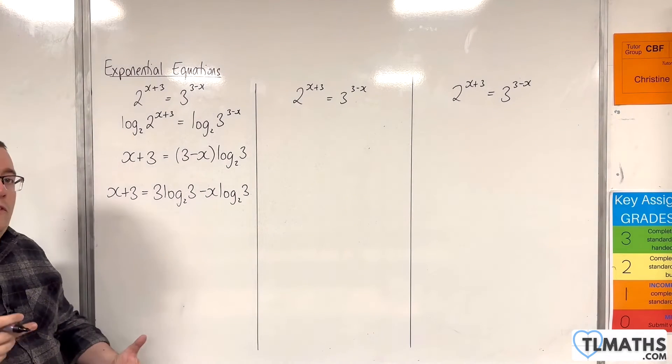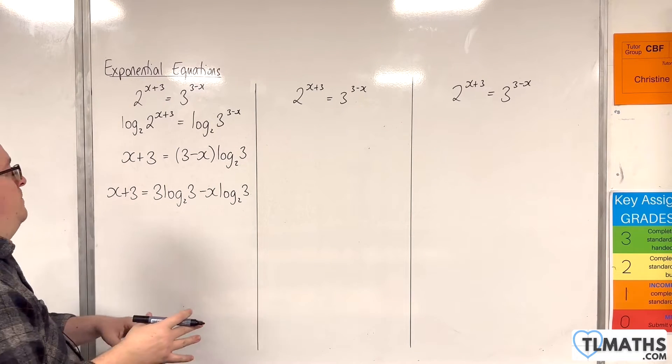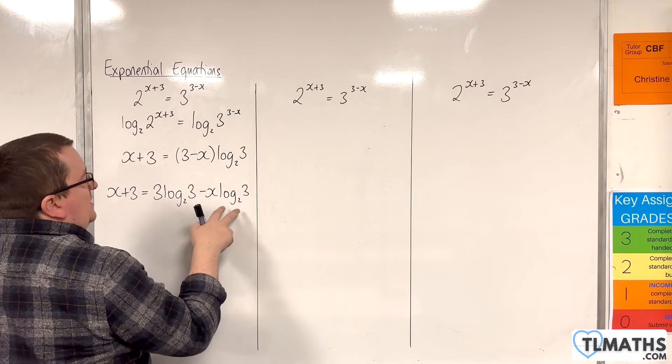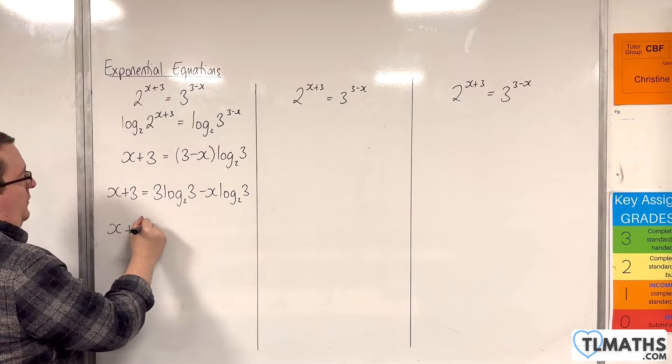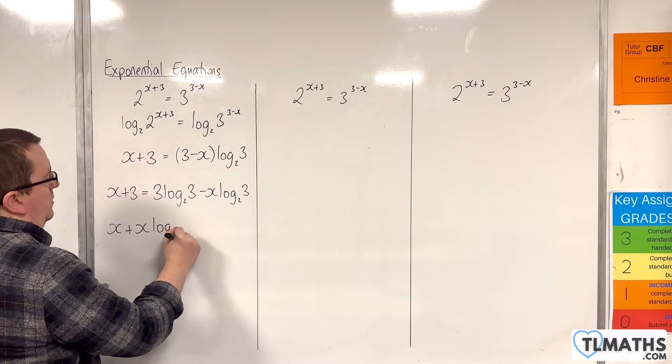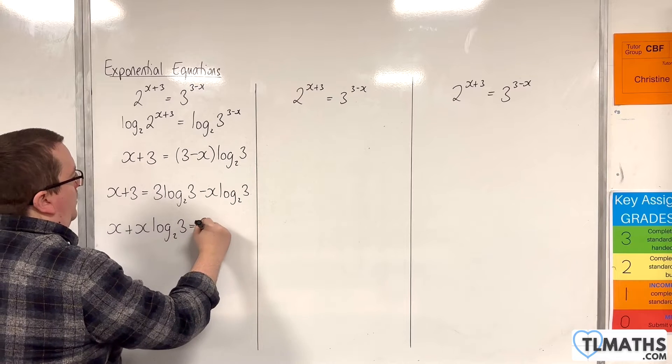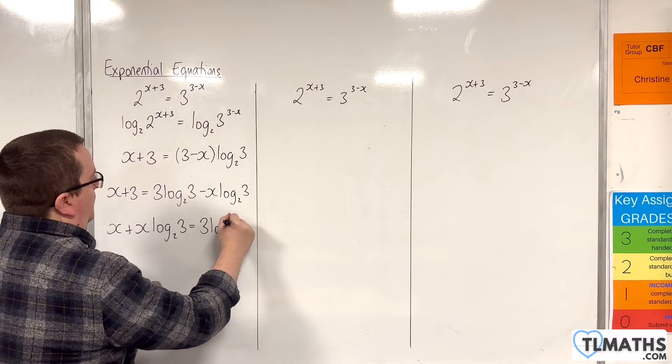We then want to group all the x's on one side and everything else on the other. So, I'm going to add x log base 2 of 3 to both sides. So, x plus x log base 2 of 3 is equal to 3 log base 2 of 3, take away 3.